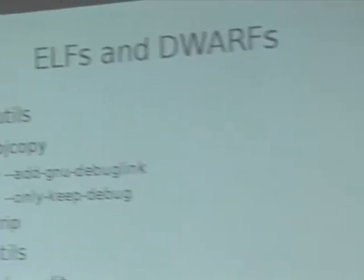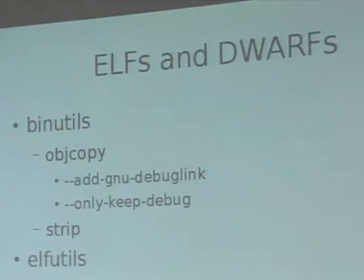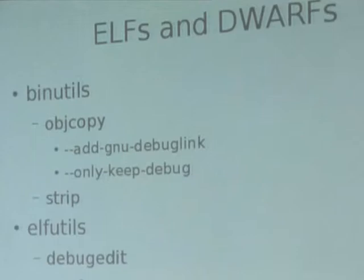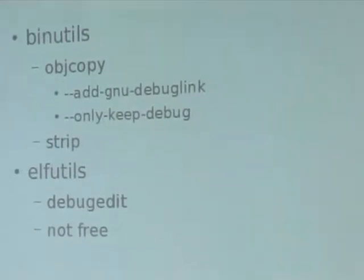There are several ways to manipulate the information in these, and binutils has a couple of them. One is objcopy, which has --only-keep-debug, which strips out the debugging symbols, and --add-gnu-debuglink, which links the program with the symbol table. There's also strip, which is pretty self-explanatory — it strips the debugging symbols completely, and it also has similar options so you can keep the debugging symbols if you want.